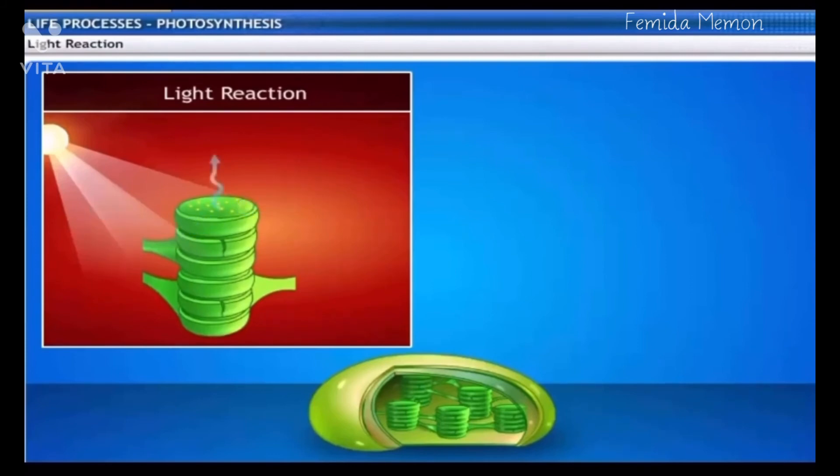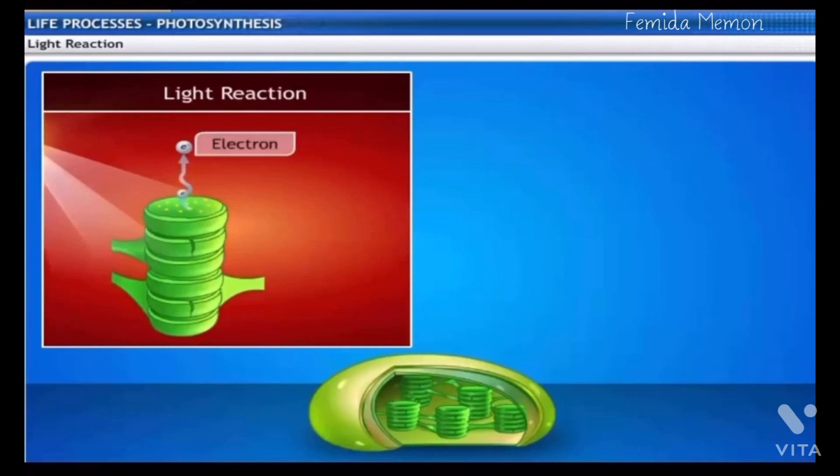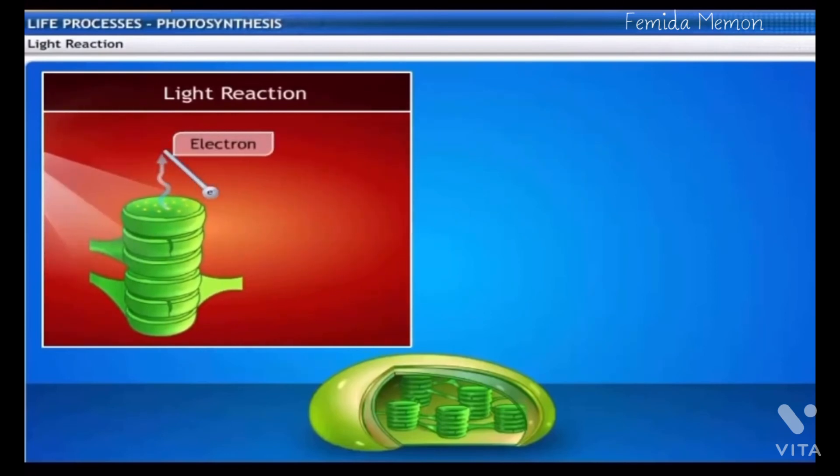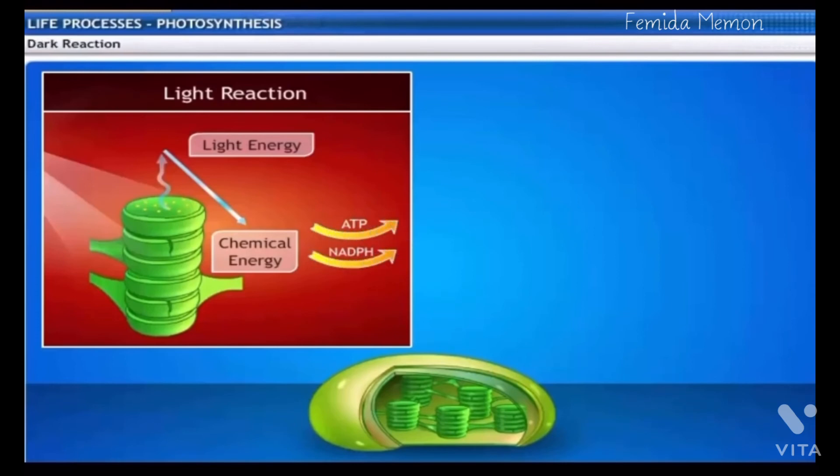The chlorophyll in the thylakoids of chloroplast traps the light energy and excites an electron. This excited electron converts light energy into chemical energy, and this chemical energy is stored as ATP and NADPH. Thus, light reaction produces the energy source ATP and NADPH, but not the food.